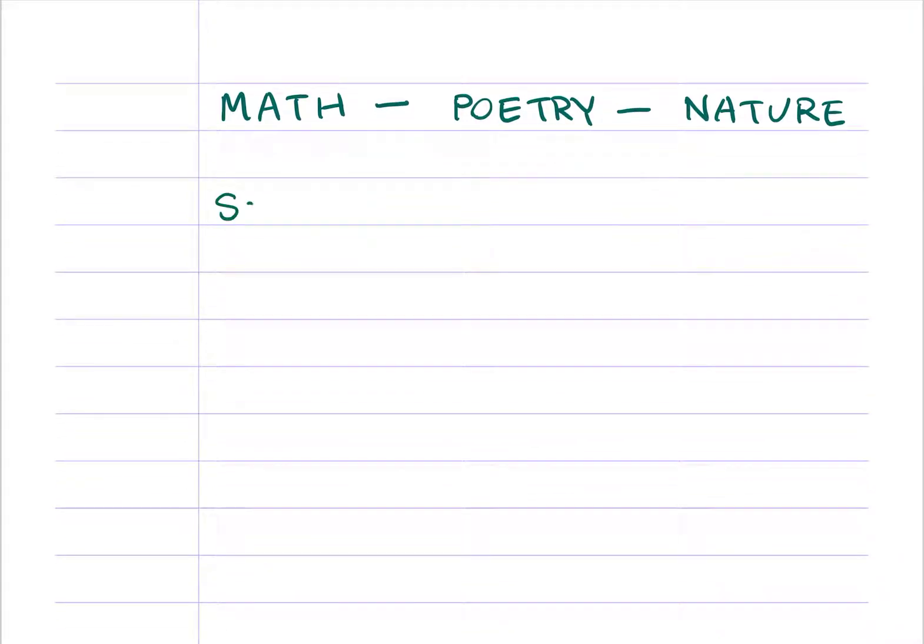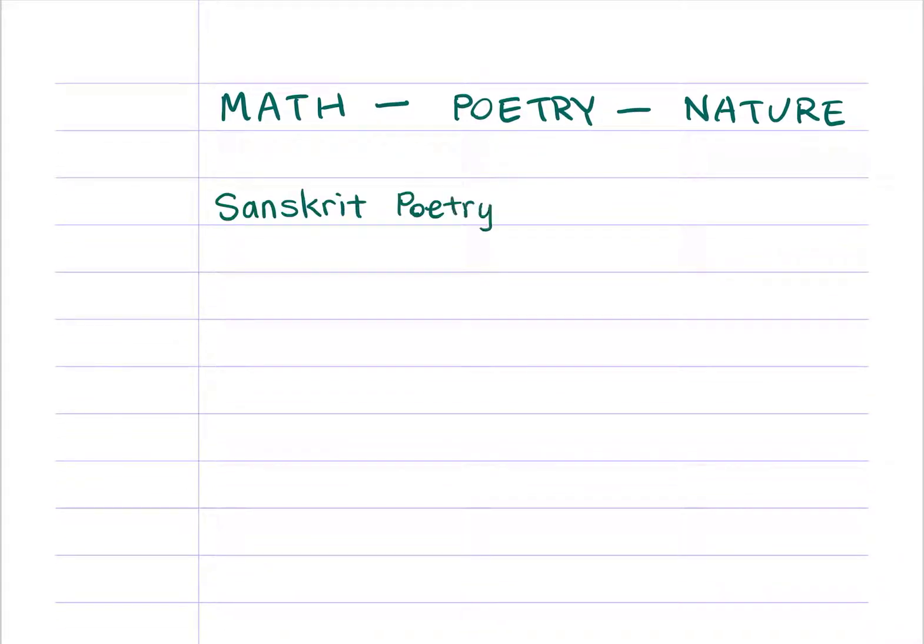Let's start with poetry, Sanskrit poetry in particular. In Sanskrit poems, there are two types of syllables, long syllables and short syllables. Long syllables have two beats, and short syllables have one beat.